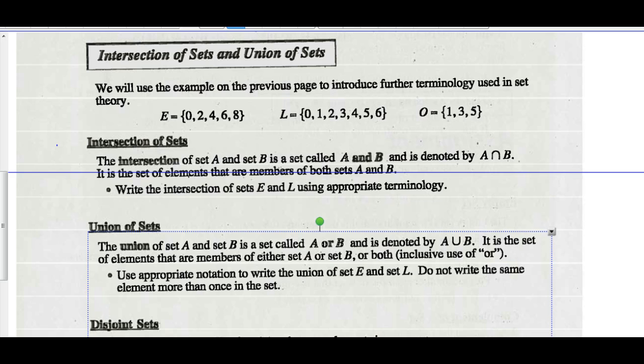Recall that set E was the set of even numbers that are non-negative single digits: 0, 2, 4, 6, 8. Set L was the whole numbers less than 7 that were non-negative single digits: 0, 1, 2, 3, 4, 5, 6. And set O was the set of odd numbers less than 7 that were non-negative single digits: 1, 3, 5.